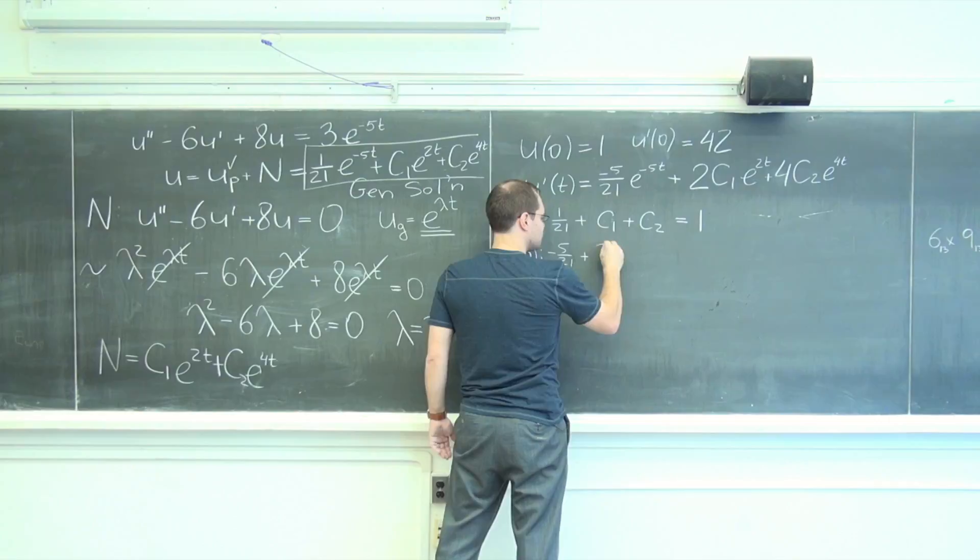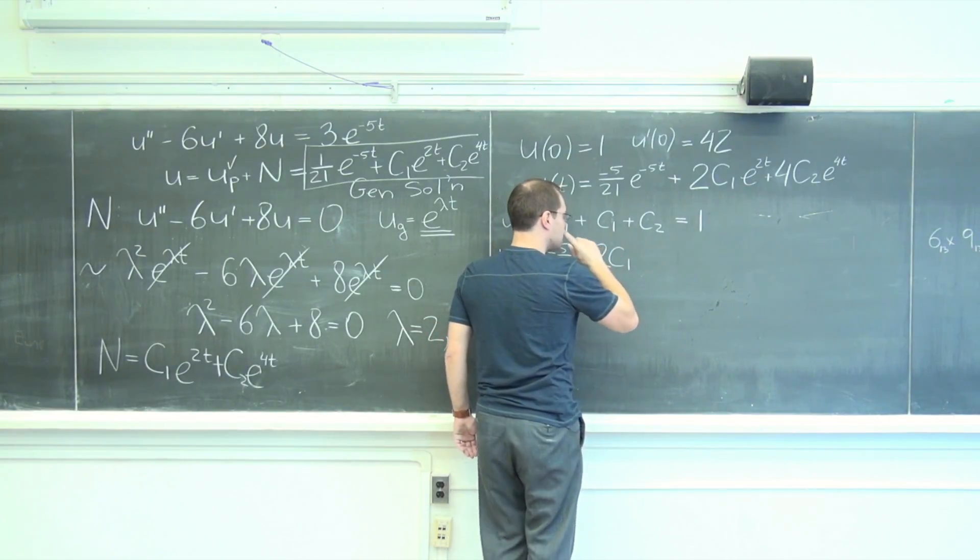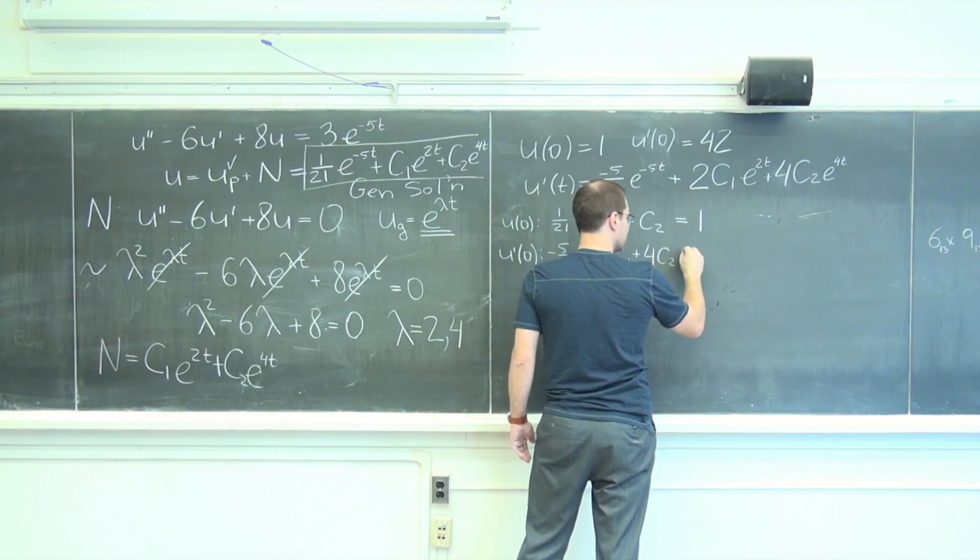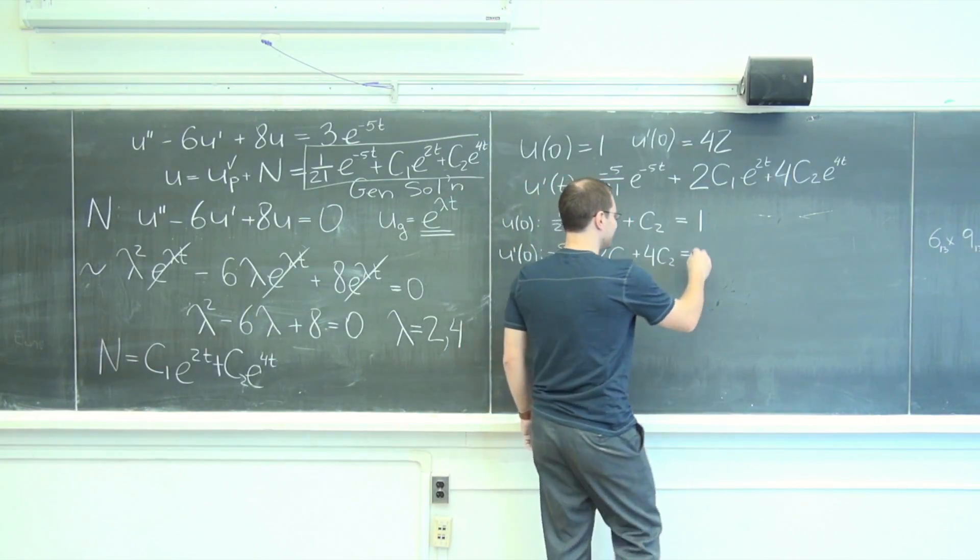This is lovely, plus 2 c1 plus 4 c2 equals 42.